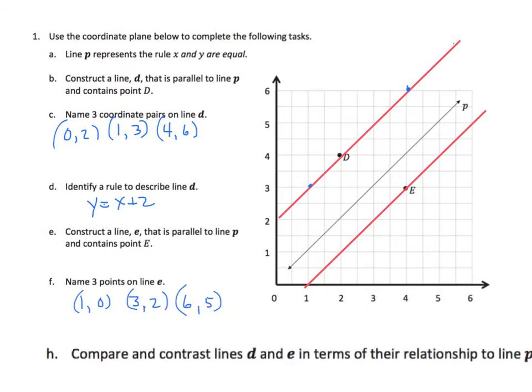Now, part 1H asks us to compare and contrast the lines D and E in terms of their relationship with line P. Well, they're both parallel to line P. That's one thing. And I notice that when we have Y, X and Y are equal, we have line P. When I added to X to find Y, I ended up above the P, yet parallel. And when I subtracted, I ended up below line P.